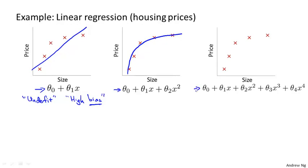And at the other extreme would be if we were to fit say a fourth order polynomial to the data. So here we have five parameters theta zero through theta four, and with that we can actually fit a curve that passes through all five of our training examples. We might get a curve that looks like this that on the one hand seems to do a very good job fitting the training set as it passes through all of my data, but this is a very wiggly curve right, going up and down all over the place, and we don't actually think that's such a good model for predicting housing prices.